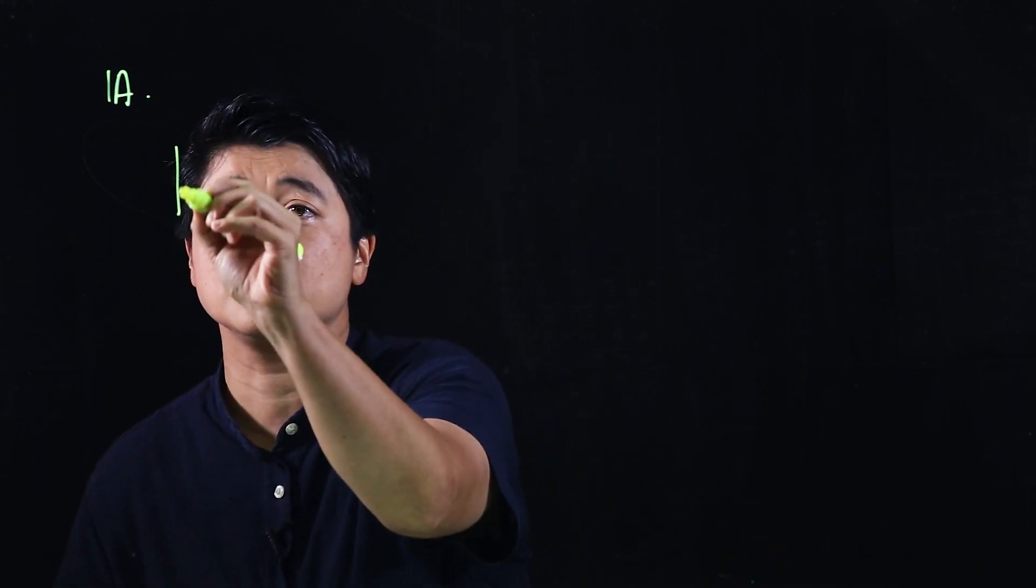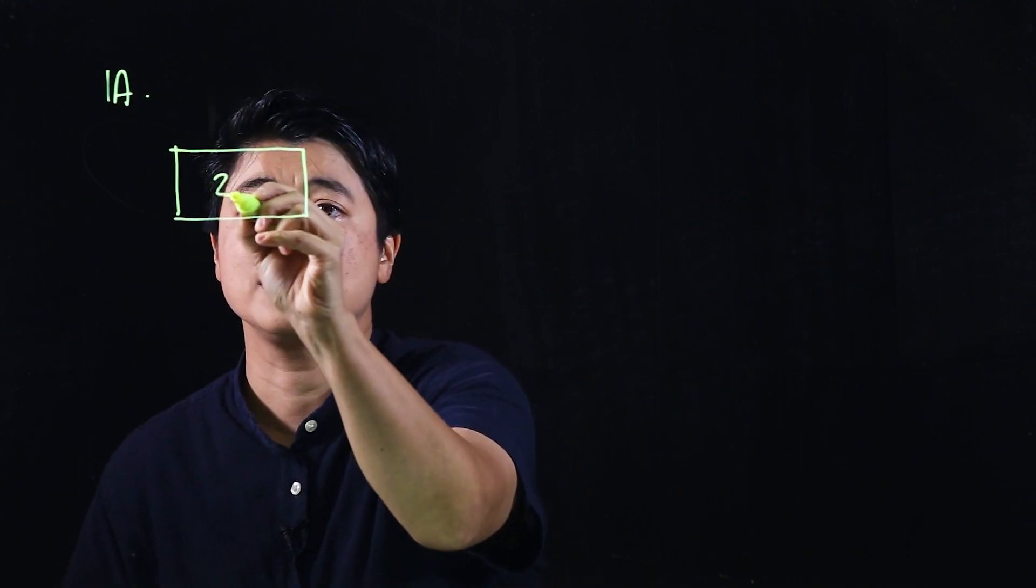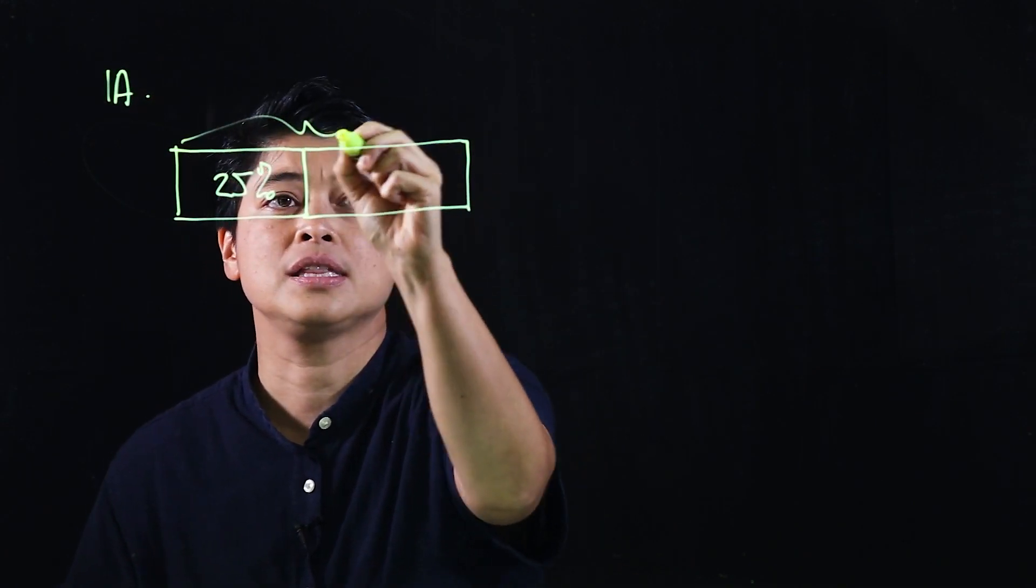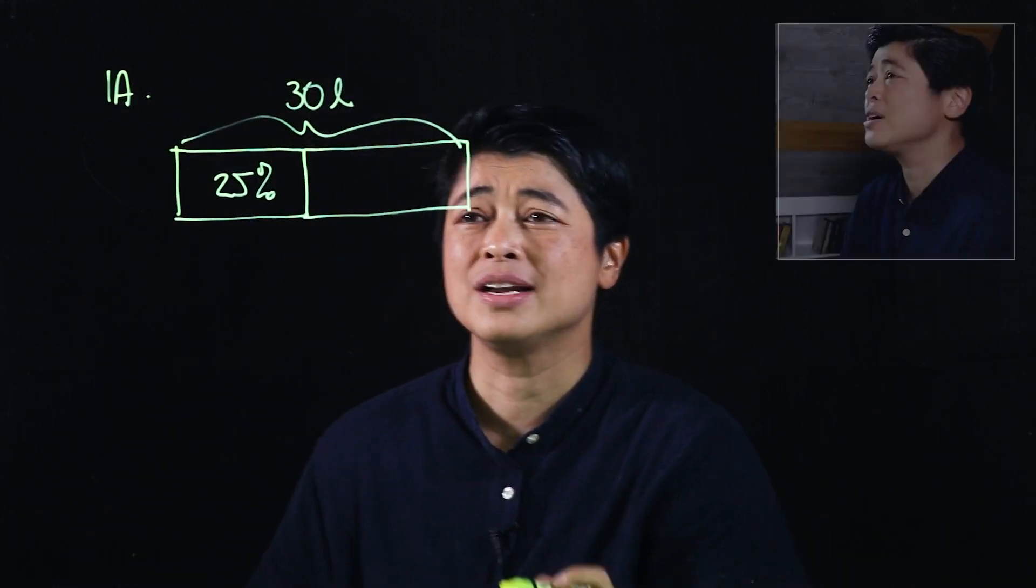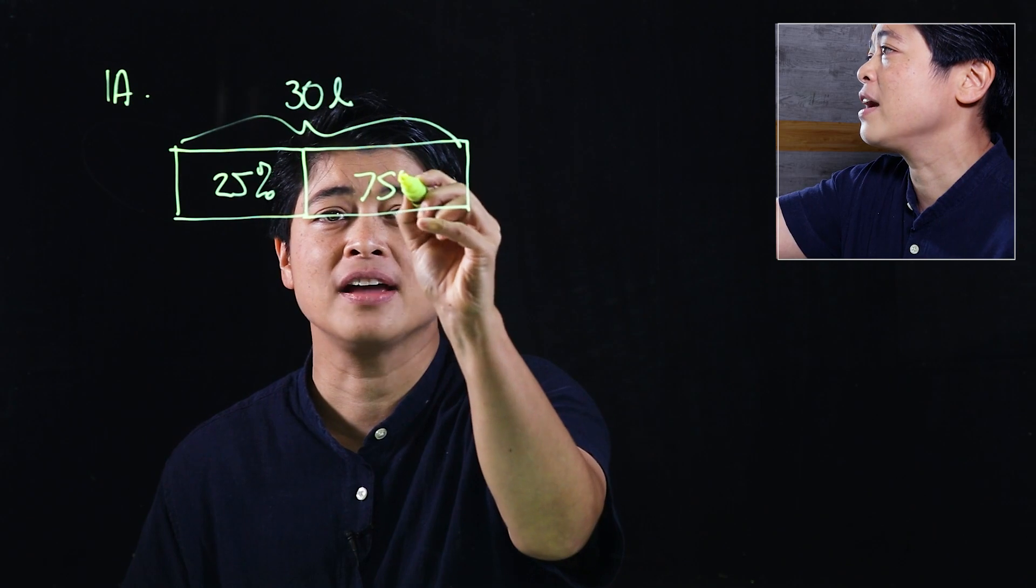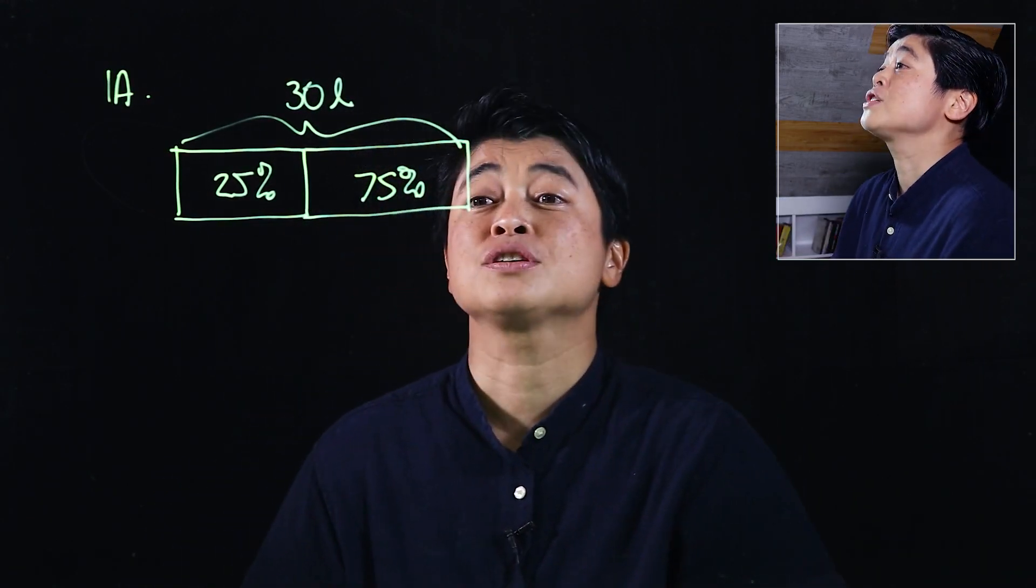We will be doing pages 67 to 68. The first problem on page 67 says a tank was filled 25 percent with water. The capacity of the tank is 30 liters. How much more water was needed to fill completely? There's a bar model given by the book. This is 25 percent. The whole tank is 30 liters. We will put the percentages inside the boxes, so if that's 25, this must be 75 percent.